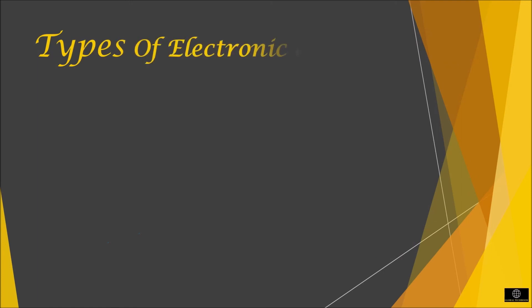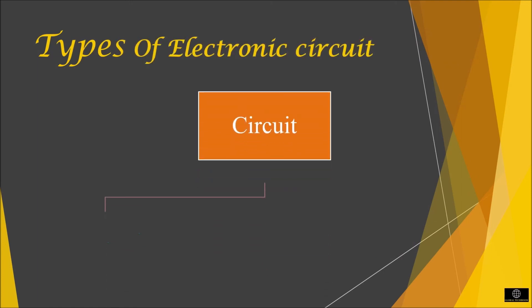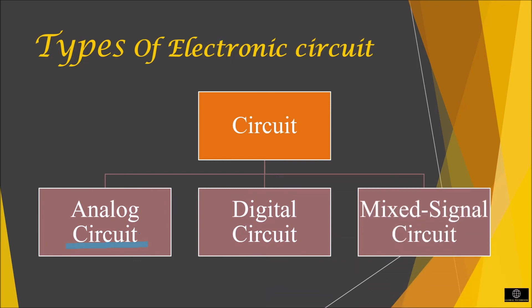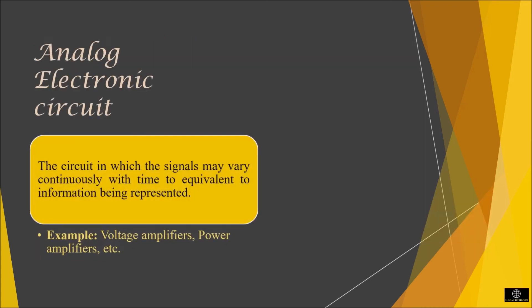Now let's move on to the types of electronic circuit. A circuit can be classified into different types: Analog electronic circuit, digital electronic circuit and mixed signal circuit. Analog electronic circuit: The circuit in which the signals may vary continuously with time to corresponding to information being represented. The working of analog circuit can be done with a normal waveform and the analog circuits can directly give the signal as the output. Examples include voltage amplifier, power amplifier etc.